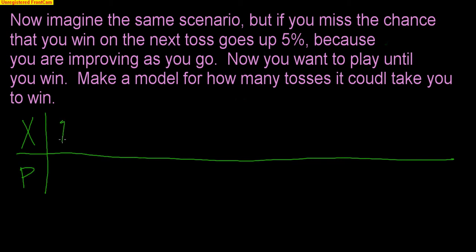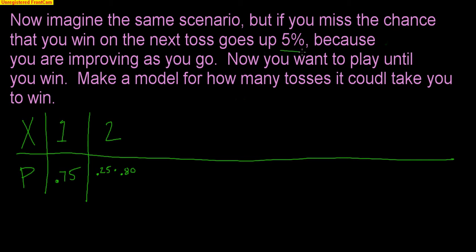What's the probability it takes one dart to win? That means I win the very first toss: 0.75. What about two darts? This time I'm improving. The probability it takes two darts to win would be 0.25 — I missed the first time — but because I'm getting better, I now have a 0.80 chance to win. So 0.25 times 0.80 equals 0.20.